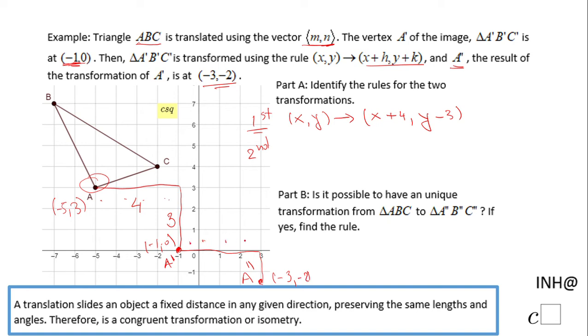We can look graphically since we have the graph here: 1, 2, and 2 down. So we have (x, y) and we have (x - 2, y - 2). This is the second transformation which changes A'B'C' into A''B''C''.